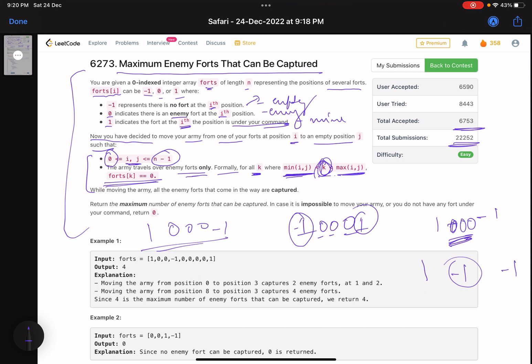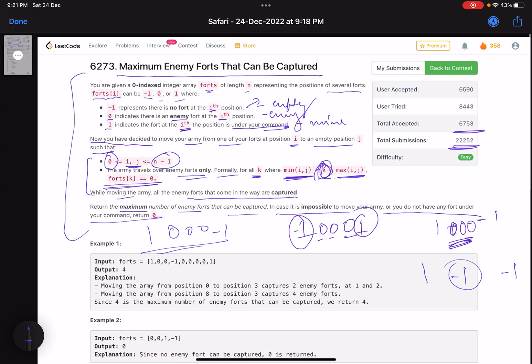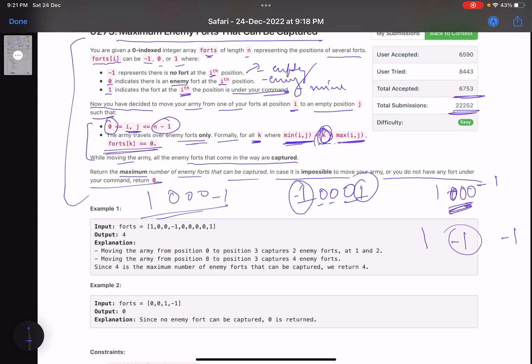While moving the army, all the enemy forts that come in your way are captured. Return the maximum number of enemy forts that can be captured. In case it is impossible to move your army, or you do not have any fort under your command, return 0.